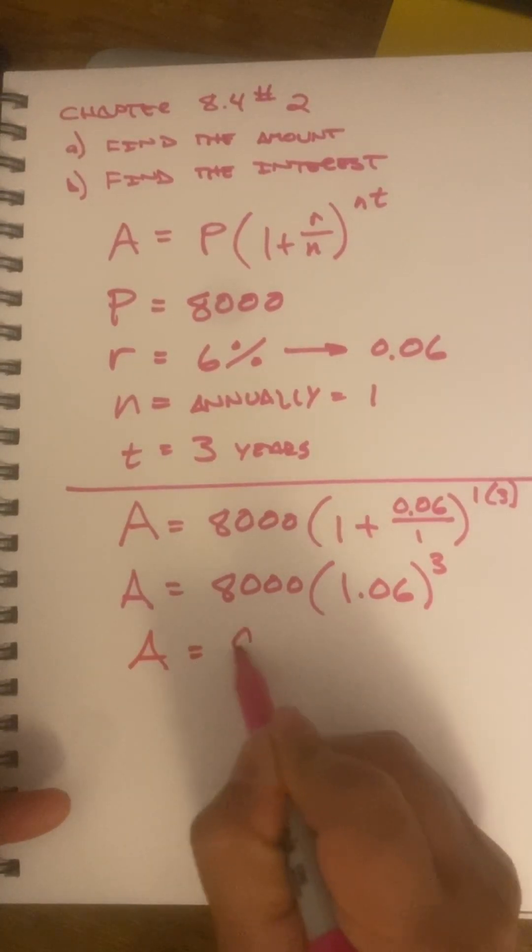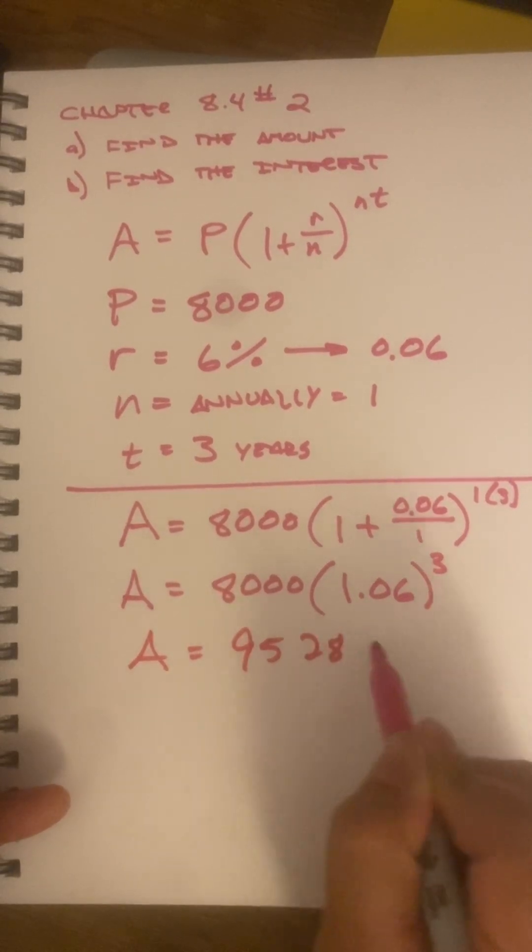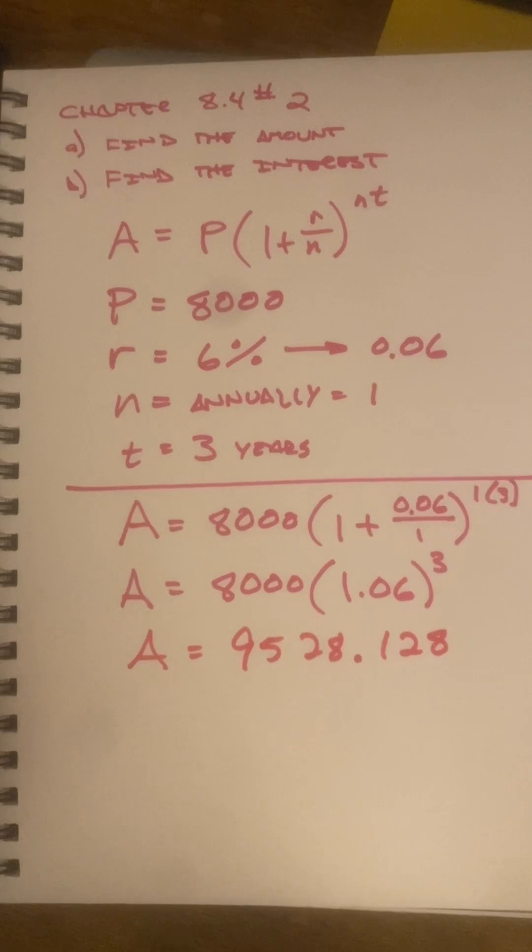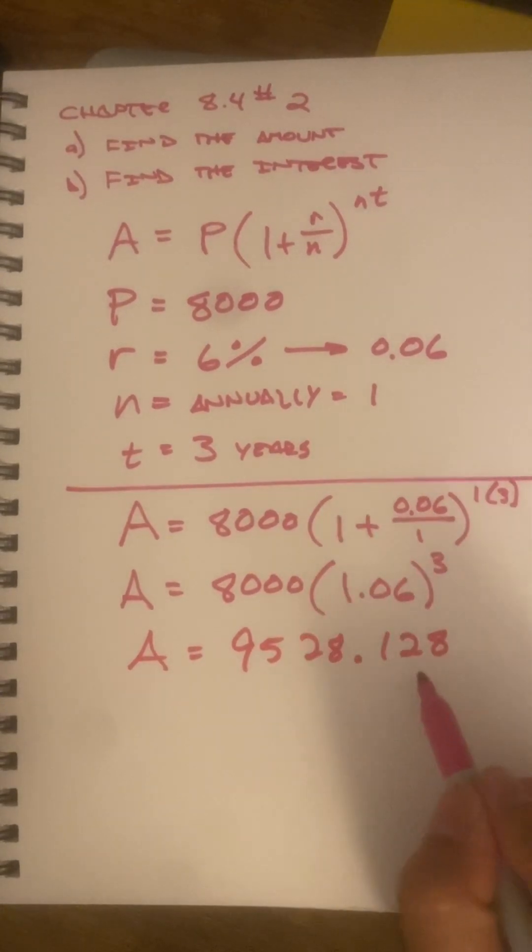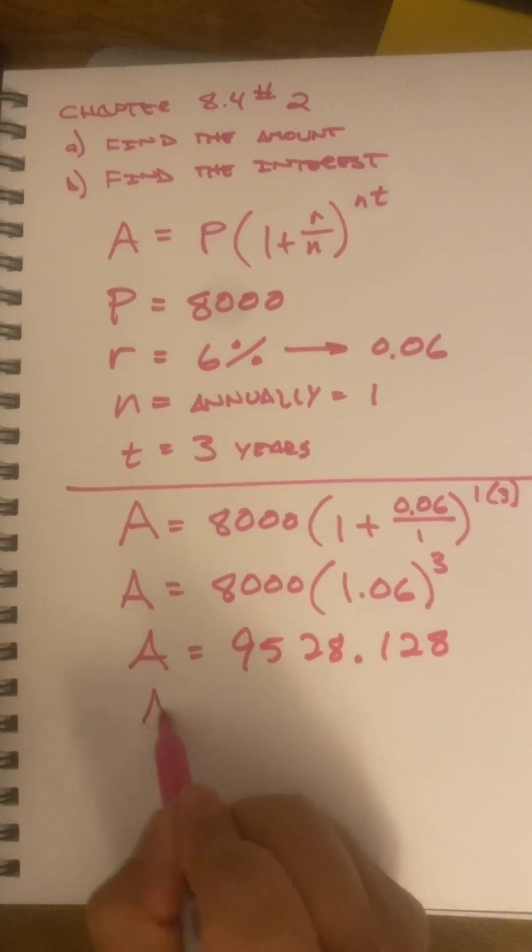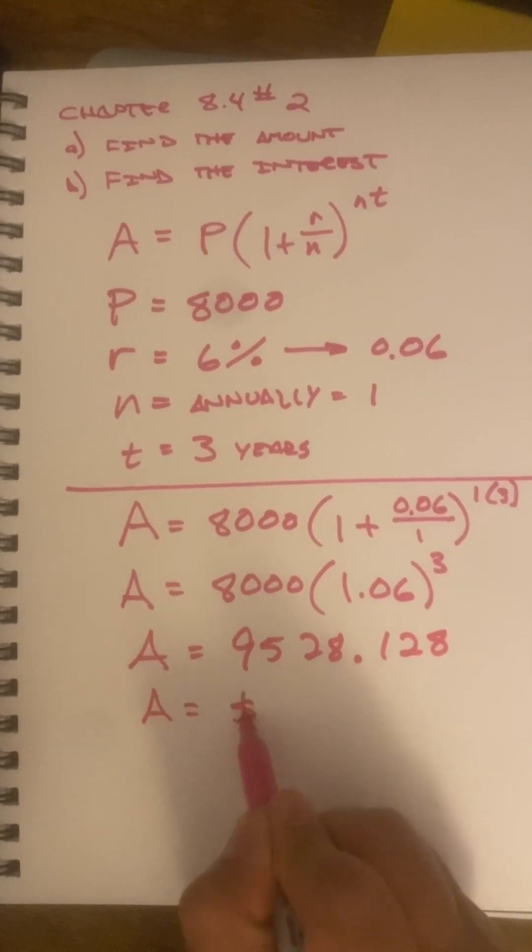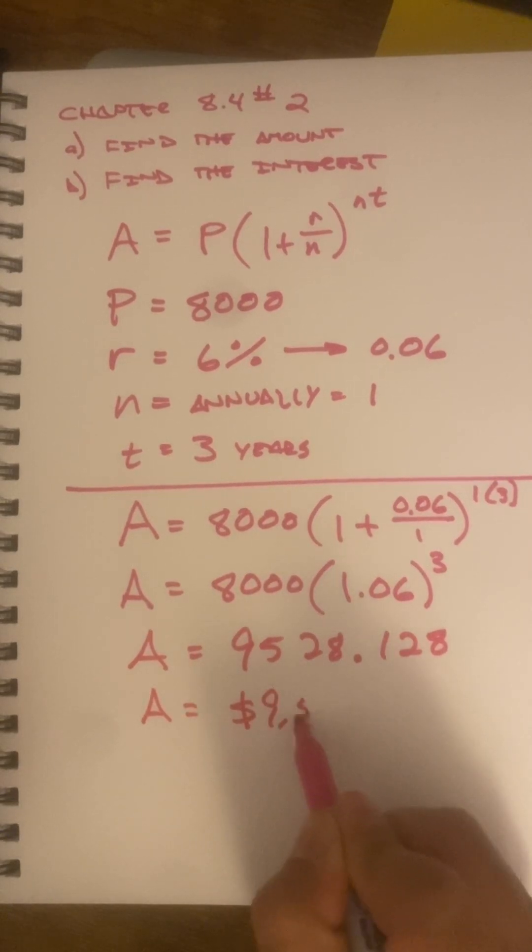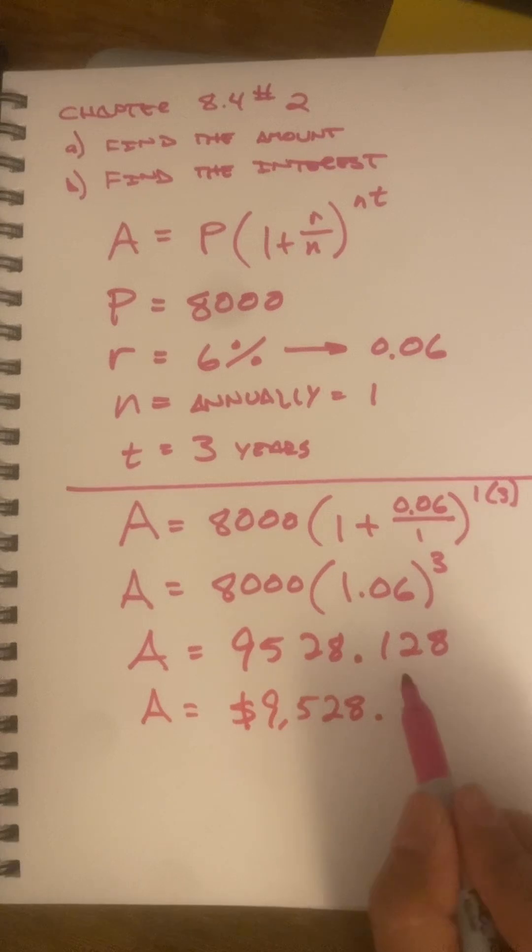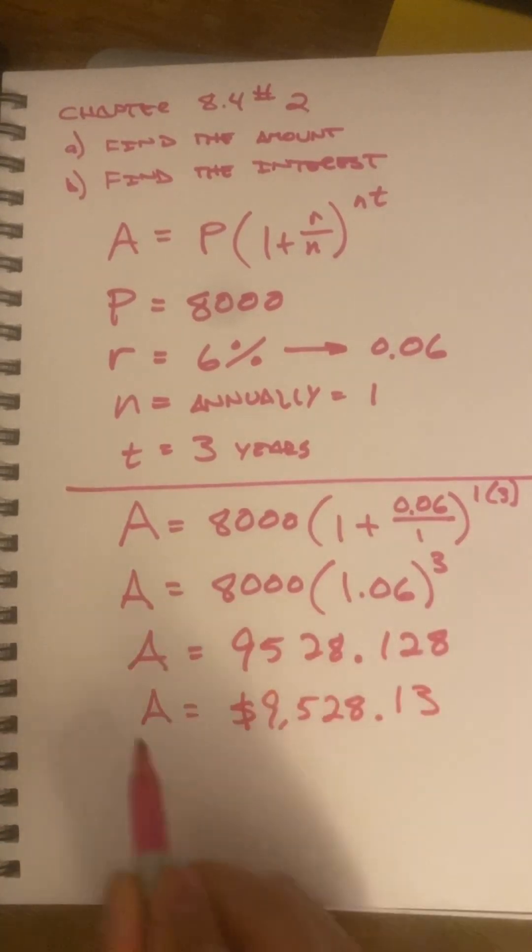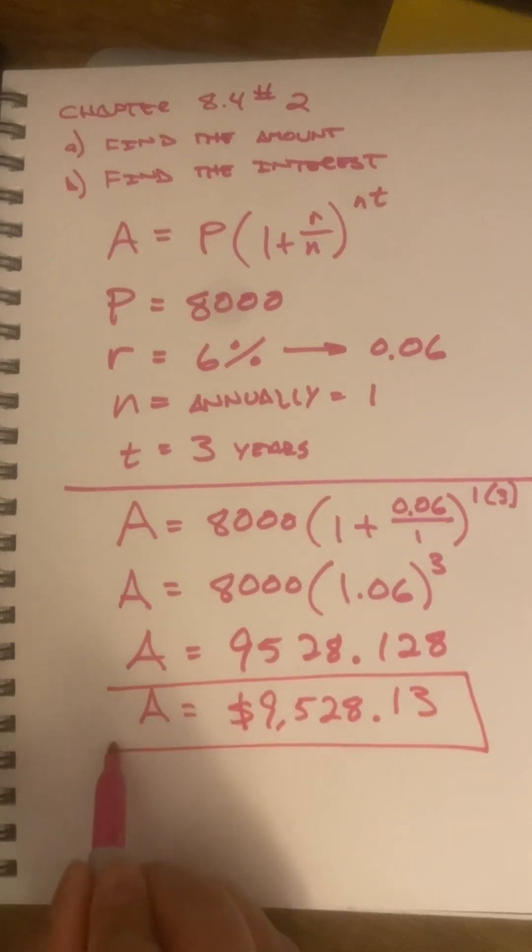And I get this long answer. The amount equals $9,528.128. Now, since we're talking about money, I want to just have two places after the decimal to get cents. So, my amount is actually $9,528, and this 8 will round up that 2 to a 3, and I'll call it 13 cents.